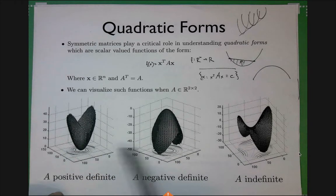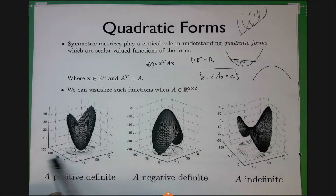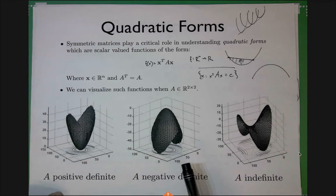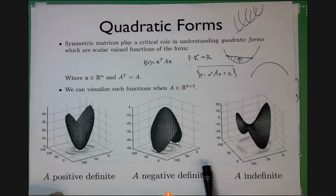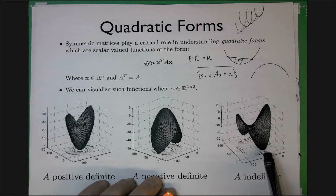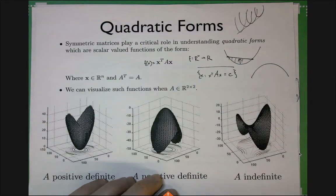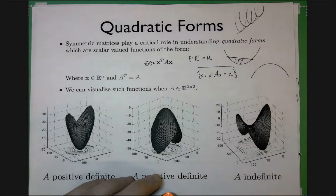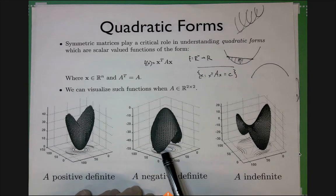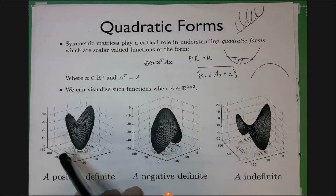For positive or negative definite quadratic forms, the level curves are ellipses, with a circle being a special case. For the indefinite saddle shape, cutting with a horizontal plane gives hyperbolas. Parabolas appear as a degenerate case for positive semi-definite or negative semi-definite.